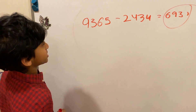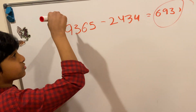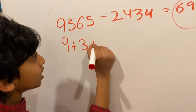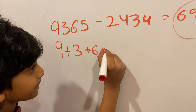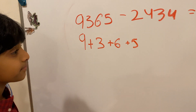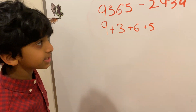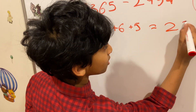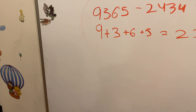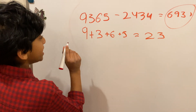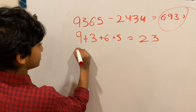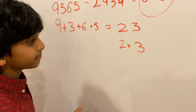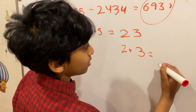Let's start with the first part of the left hand side: 9 plus 3 plus 6 plus 5. Our answer is 23. Now let's make 23 into a single digit number: 2 plus 3 which is equal to 5. So 5.